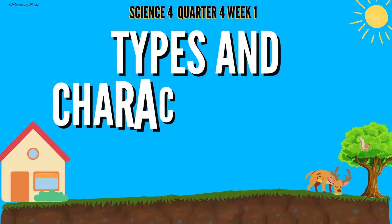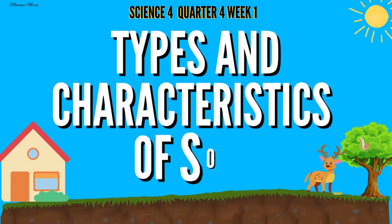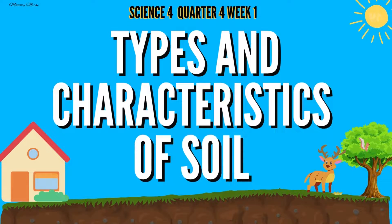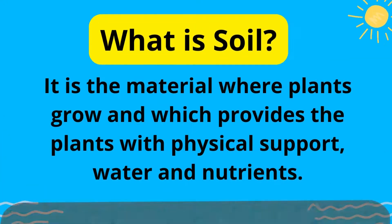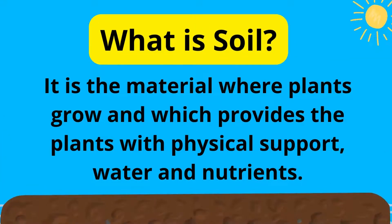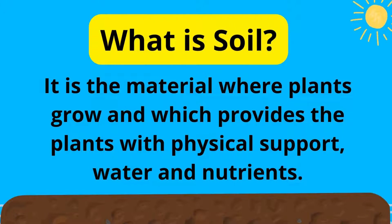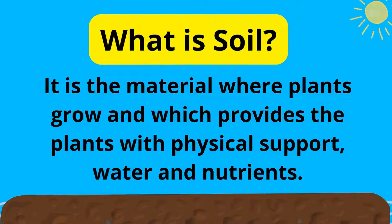Hello there! For today's video, we're going to discuss the types and characteristics of soil. So what is soil? Soil is the material where plants grow and which provides the plants with physical support, water, and nutrients.